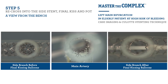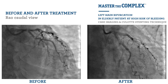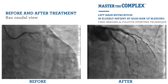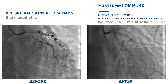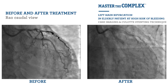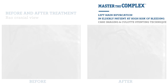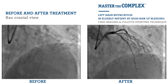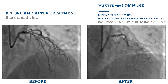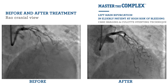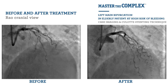Following the final kissing balloon inflation, on the bench model you can see that the side branch crowns and connectors have been pushed to the side, and in the main branch there is no obstruction. The procedure is now complete. On the REO caudal before-and-after images you can see excellent stent expansion extending all the way back to the ostium of the left main stem. On the REO cranial view there is excellent stent expansion within the proximal LAD, and beyond the stent there is a quite pronounced myocardial bridge.